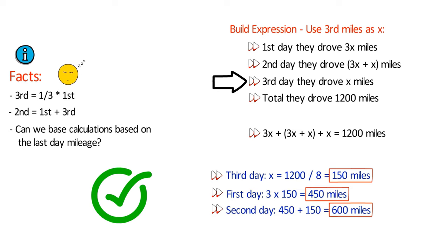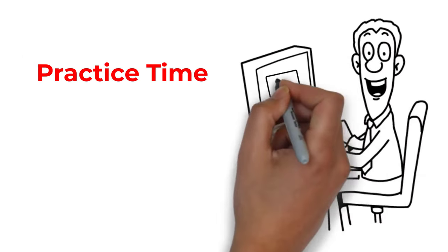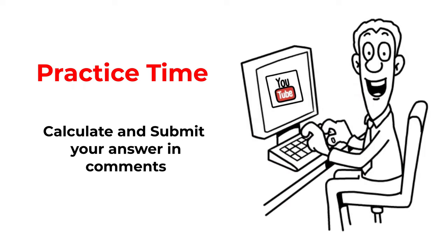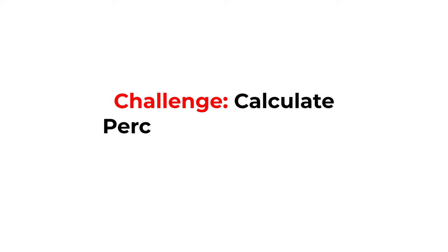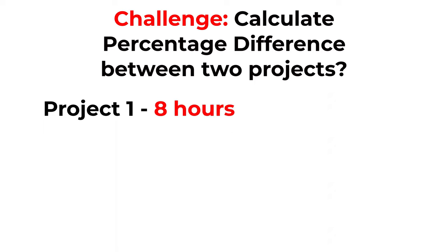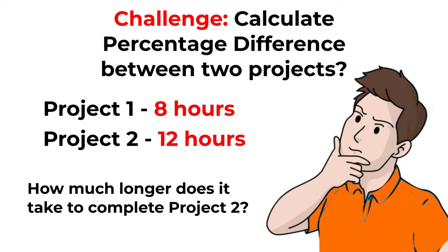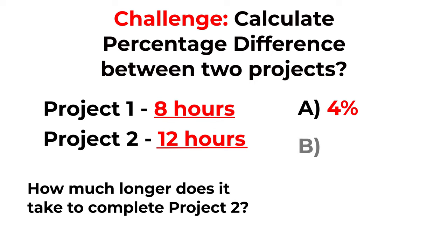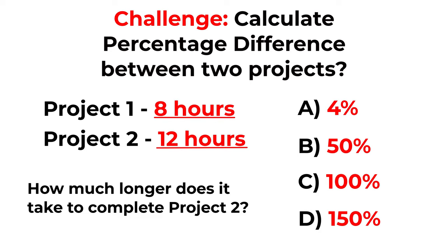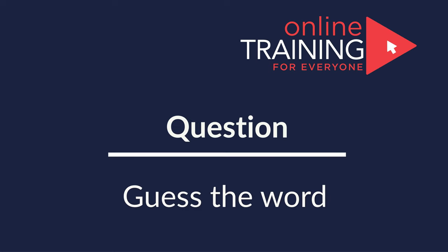Here's a practice question. Project one takes 8 hours and project two takes 12 hours. How much longer in percentage does it take to complete project two versus project one? Choices: A: 4%, B: 50%, C: 100%, D: 150%. Post your answer in the comments.